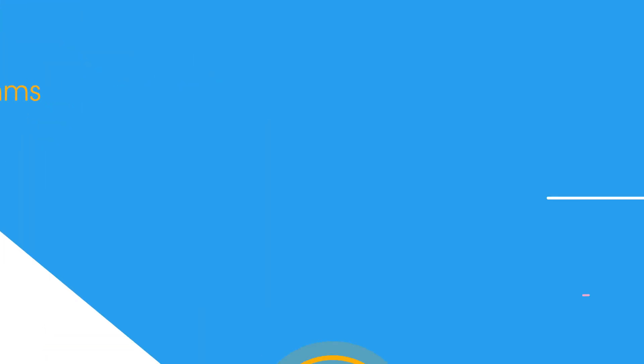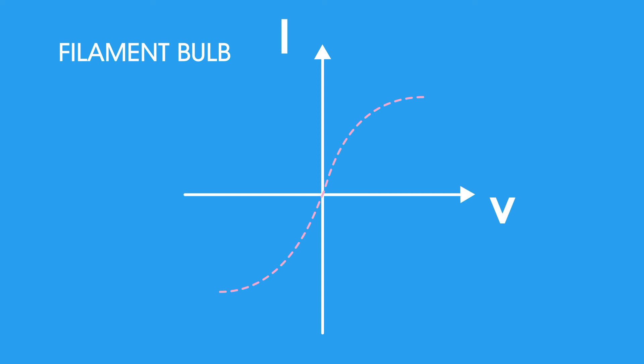Here is an IV graph for a filament bulb. Due to the resistance of the filament, energy is transferred making the wire hot. The hotter the wire, the higher its resistance, so further increases in the voltage V result in a proportionally lower increase in current I.